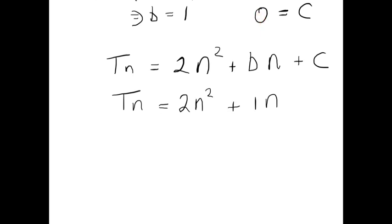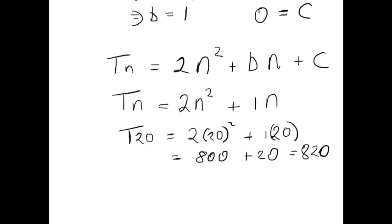So this is the nth term. For example, if we wanted to find the 20th term, we would simply put 20 in for n in this formula and that would give us the value of the 20th term. That wraps it up for the nth term of a quadratic sequence. We've also shown you how to get the nth term of a linear sequence. There is another type of sequence called an exponential sequence, but I'll leave that for another video. Thank you.